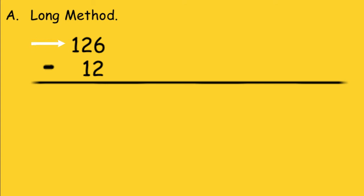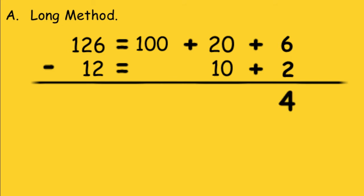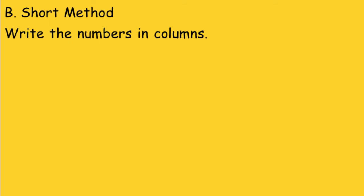First, the long method: write 126 in expanded form and write 12 in expanded form. 126 equals 100 plus 20 plus 6, minus 12 equals 10 plus 2. Subtract the number in the ones place first: 6 minus 2 equals 4. Write 4 in the ones place. Next, subtract the tens digits: 20 minus 10 equals 10. Then, for the hundreds place, there is no hundreds digit in the subtrahend, so bring down 100. The value of 100 plus 10 plus 4 is 114. The answer is 114.